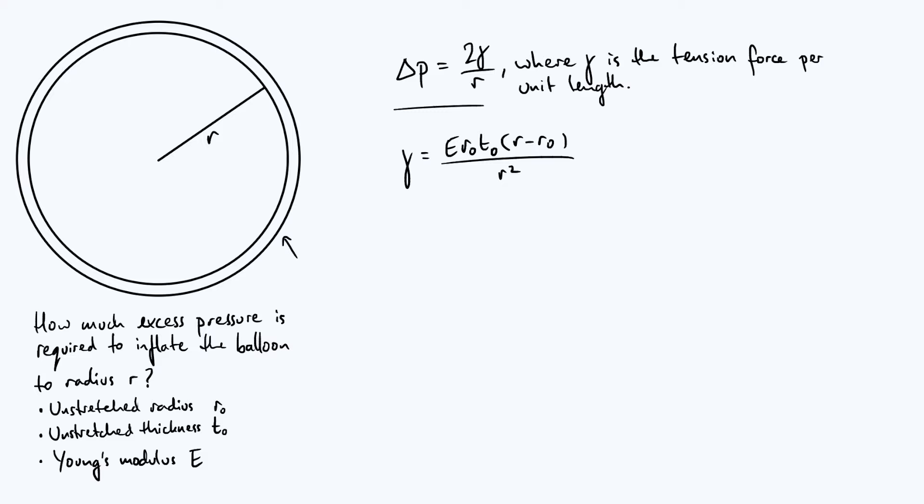But now that we've got our expression for γ, it's very straightforward to get an expression for the excess pressure Δp because Δp is just 2γ/r. So all that's going to happen is that we pick up an extra factor of 2 on the numerator. So we've got 2Er₀T₀(r - r₀), we've got one extra factor of r on the bottom, so it was r², so now it is r³. So there's our expression for the excess pressure that we were looking for.